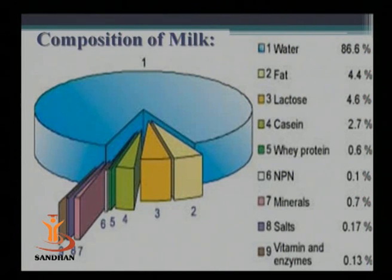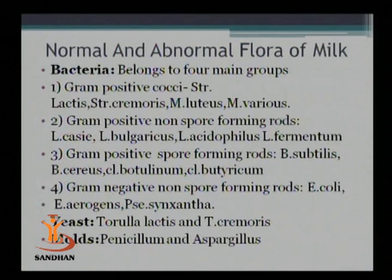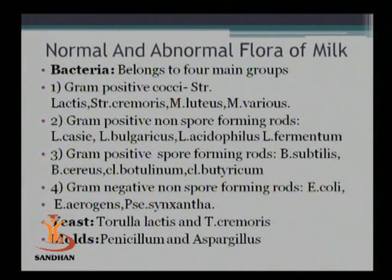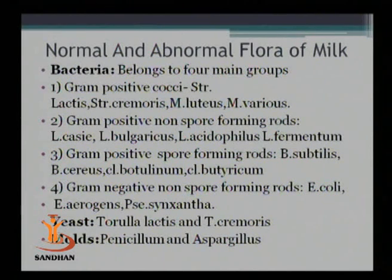Now let us look at the composition of milk and the normal and abnormal flora of milk. There are numerous bacteria, yeast, molds, and bacteriophages present in a milk sample. In raw milk, there is the presence of bacteria belonging to four main groups. The first group is gram-positive cocci, including especially Streptococcus lactis, Streptococcus cremoris, Micrococcus luteus, and Micrococcus varians.